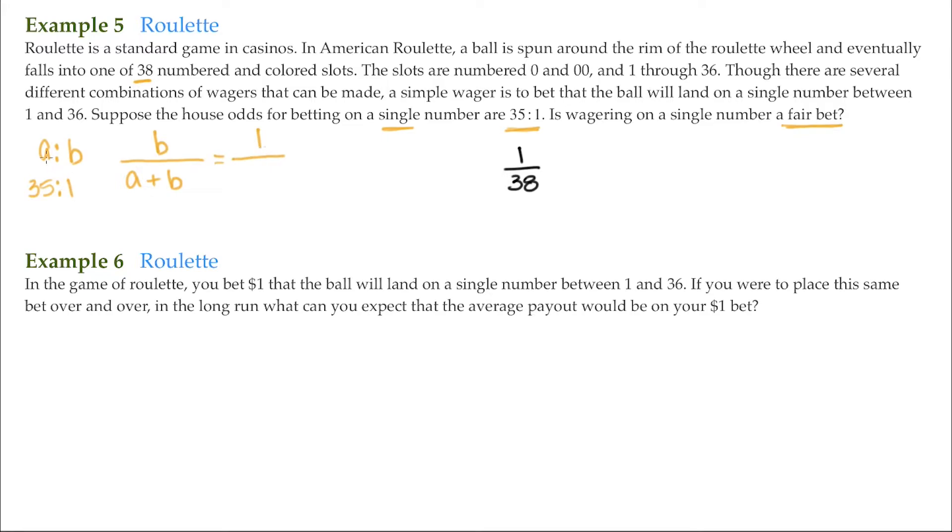And B here is 1. And A plus B, 35 plus 1, that's 36. So according to the house, you have a probability of 1 out of 36, which is not the same as the 1 out of 38.